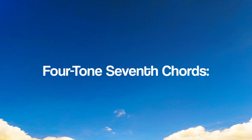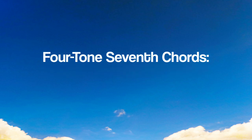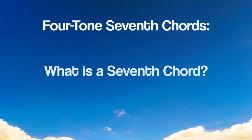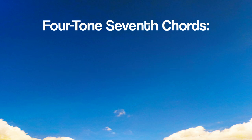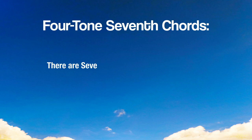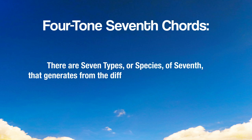Now that we've grasped the concept of inversions in triads, we can talk about 4-tone 7th chords. A 7th chord is a chord consisting of a triad plus a note forming an interval of a 7th above the chord's root. There are 7 types or species of 7th chords that generate from the different major and minor modes.